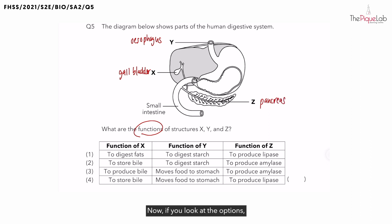Now, if you look at the options, function of structure X, the gallbladder, is it to digest fats? Which organ does digestion of fats happen in? Does digestion of fat happen in the mouth, stomach, or small intestines?